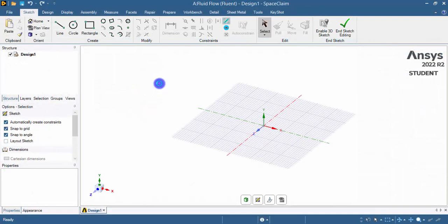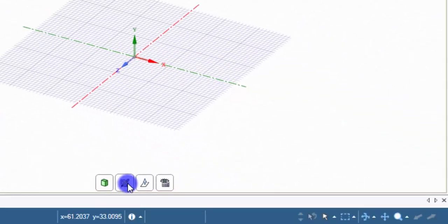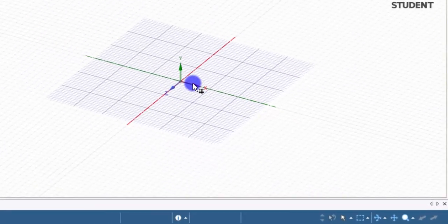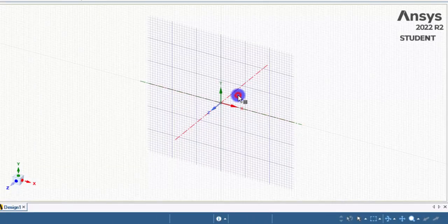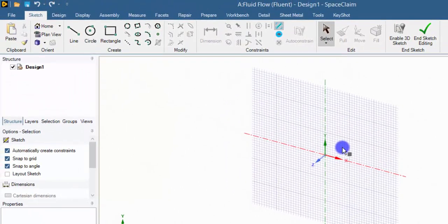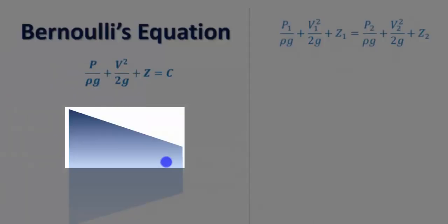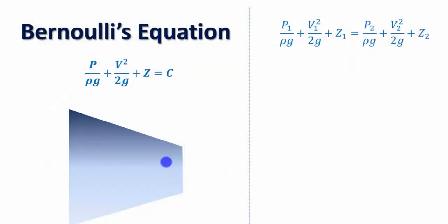Once the Space Claim window has been opened, go to the sketch mode and select the XY plane and start sketching. We need not perform a three-dimensional analysis. We can simply draw that in two dimensions and we can solve by using the two-dimensional solver by using axis-symmetric boundary condition. Let us have this as the axis and here we need to create a geometry of half of this.